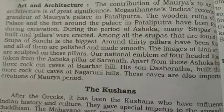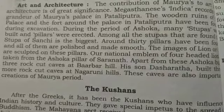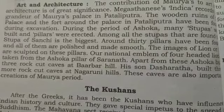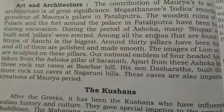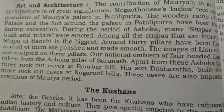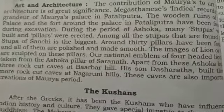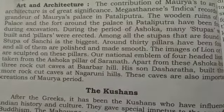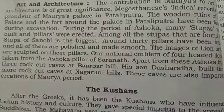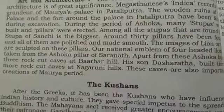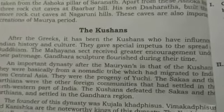Apart from these, Ashoka had rock-cut caves built at Barabar Hill. His son Dasharatha built more rock-cut temples in the Nagarjuni Hills. These caves are also important creations of the Maurya period.